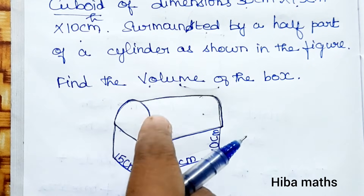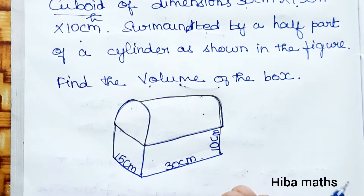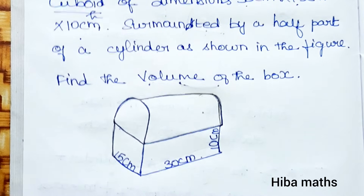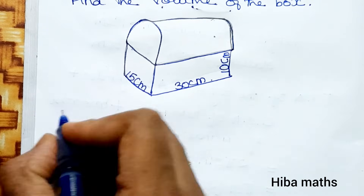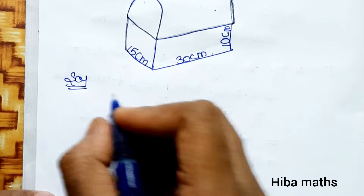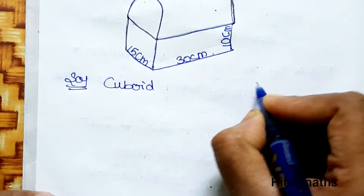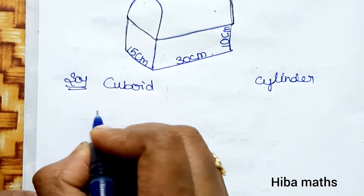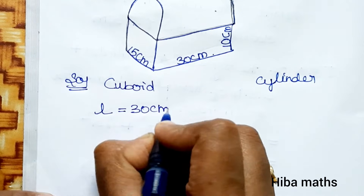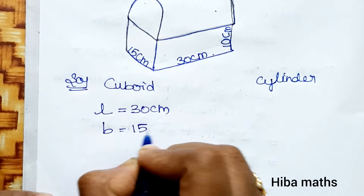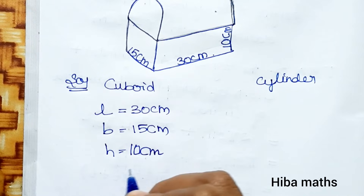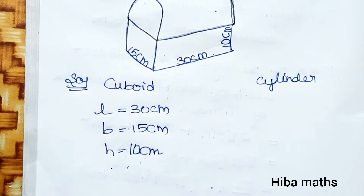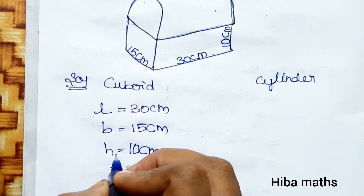The box is made of two parts: a cuboid and a half cylinder. The dimensions of the cuboid are: length = 30 cm, breadth = 15 cm, and height h1 = 10 cm.